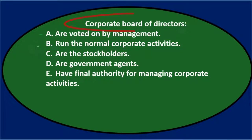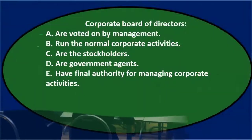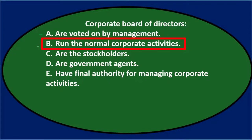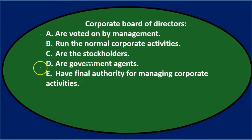Option B — run the normal corporate activities: the board of directors doesn't normally run day-to-day corporate activities; that's done by management and employees. So we can eliminate B. Option C — are the stockholders: we might think that, so we'll keep it. Option D — are government agents: the board of directors doesn't need to be government agents; that's more the SEC. So we can eliminate D. Option E — have final authority for managing corporate activities: that seems reasonable.